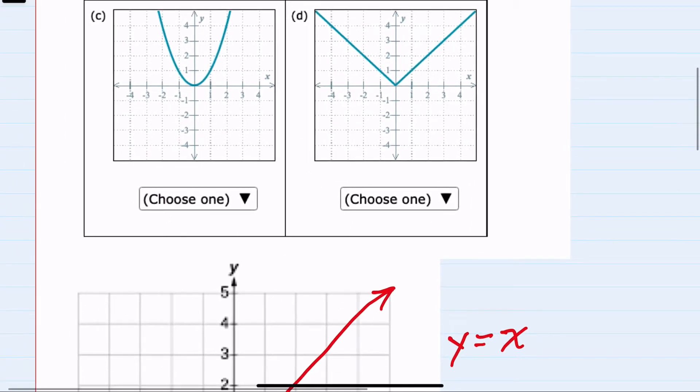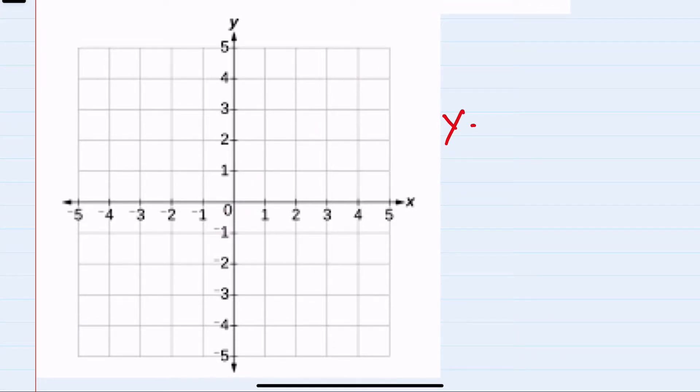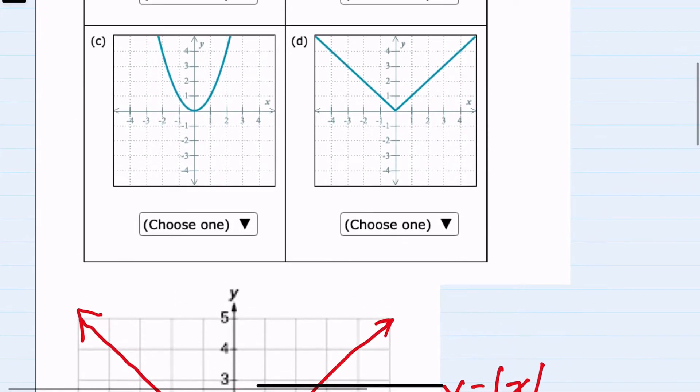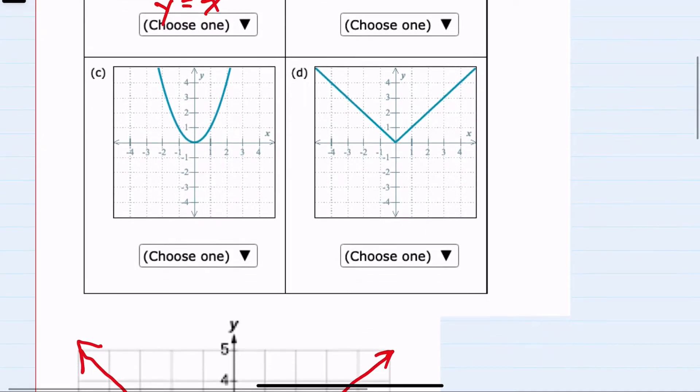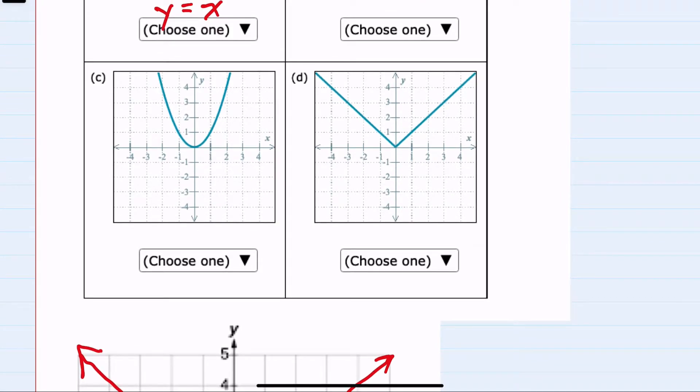Then other parent functions, we have y equals the absolute value of x. This is similar to y equals x, except all of the negative values become positive, so that will have this v shape. And again, looking at our four examples, we do have this parent function represented.